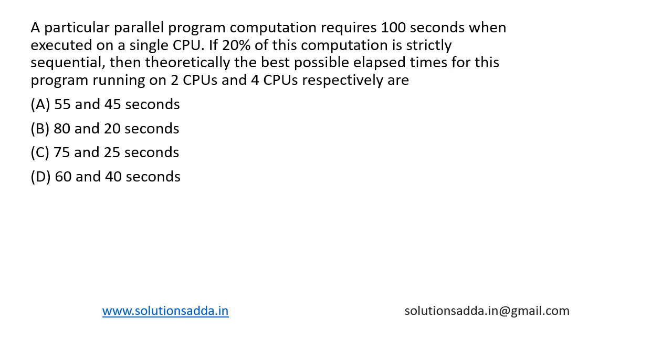This is a question from operating system. A particular parallel program computation requires 100 seconds when executed on a single CPU. If 20% of this computation is strictly sequential, then theoretically the best possible elapsed times for this program running on 2 CPUs and 4 CPUs respectively are what? So total execution on single CPU is 100 seconds.